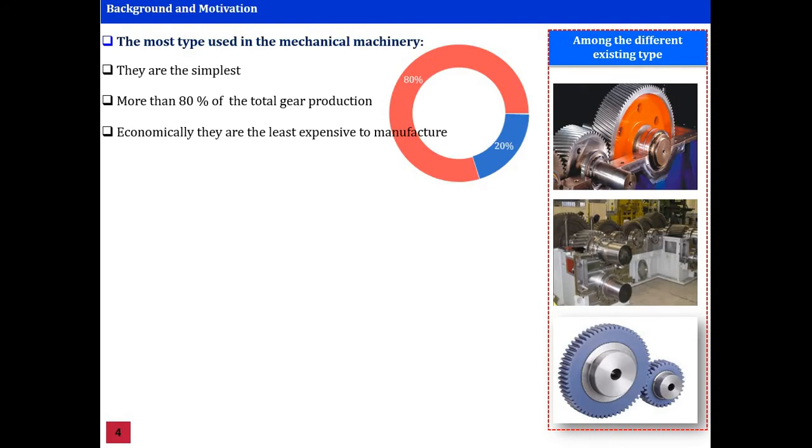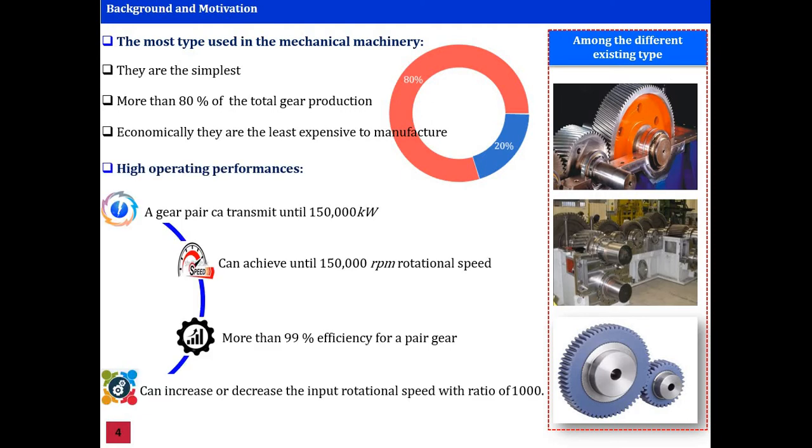Among the different existing types of gears, cylindrical gears are the most widely used in mechanical machinery because they are the simplest, represent more than 80% of the total gear production. Economically, they are the least expensive to manufacture. In addition, this kind of gear is characterized with high operating performances.